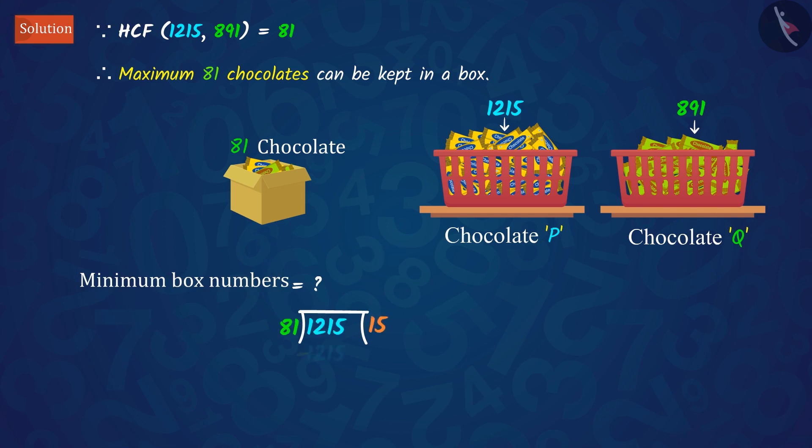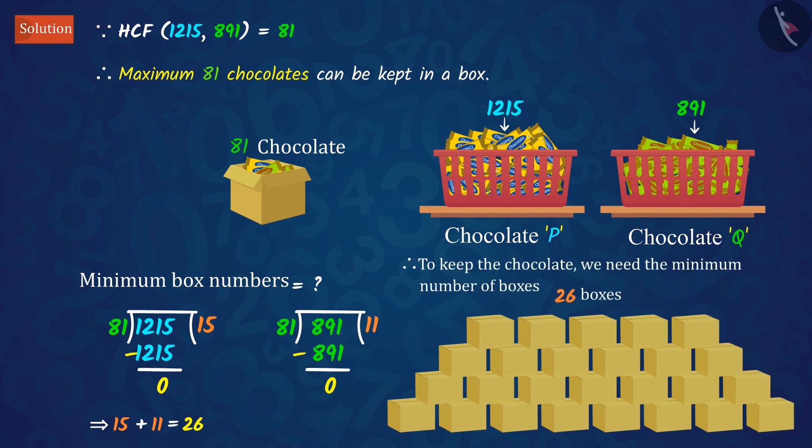Well done! If we divide the number of chocolates P and chocolate Q by 81, that is, the maximum number of chocolates that can be kept in a box, and add the quotients obtained, we get 26, which is the minimum number of boxes required. Hence, minimum 26 boxes are required to keep the chocolates.